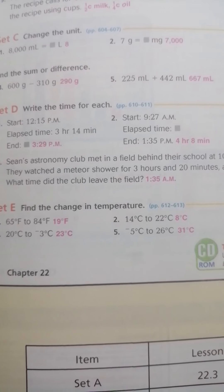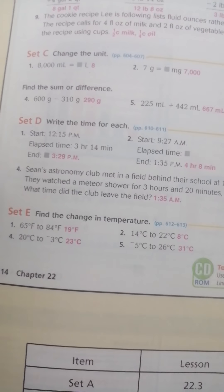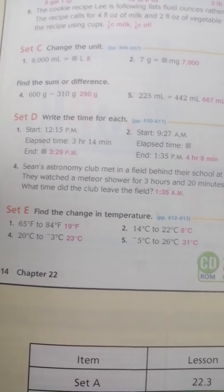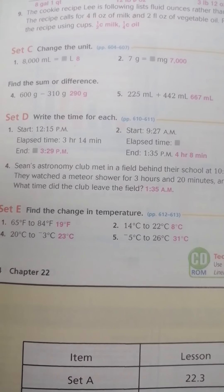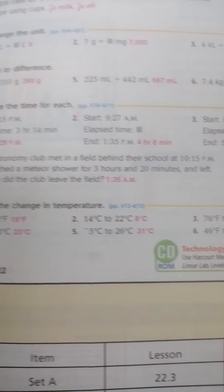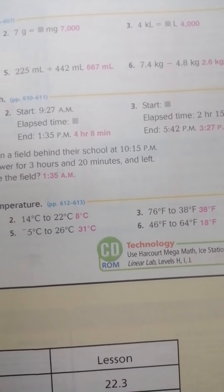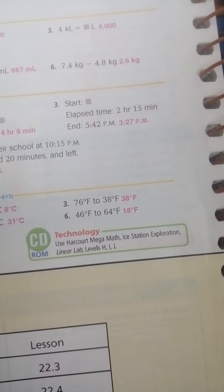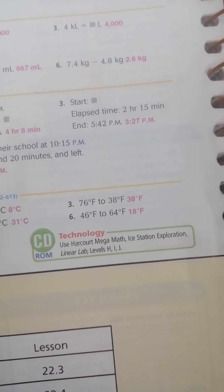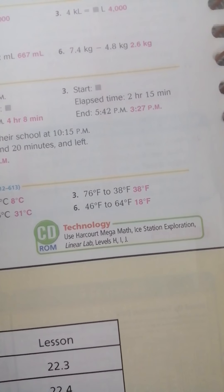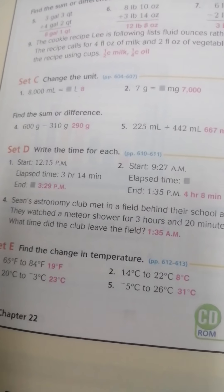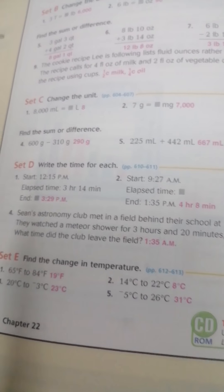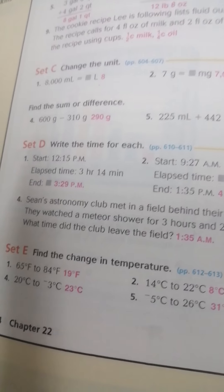And the last one here, find the change in the temperature. 65 to 84, make what? Make minus. 20, 20 to negative 3, make plus 23. 14 to 22, make minus. Negative 5 to 26, make plus 76. 76 to 38, make minus. The last one again, make minus. Okay, you can understand the chapter and the lesson today.